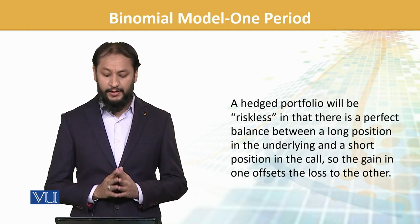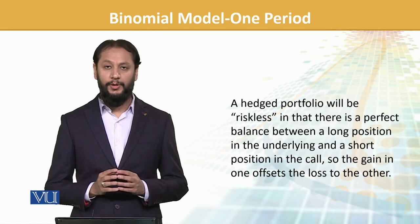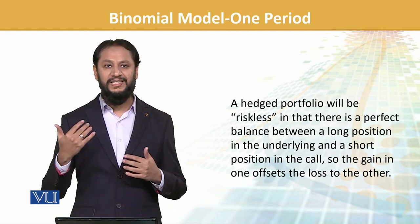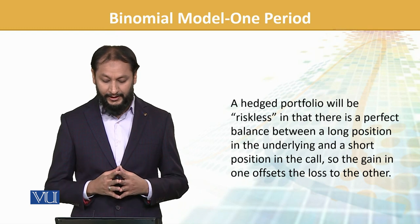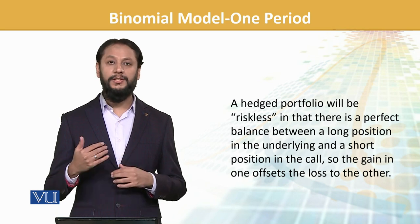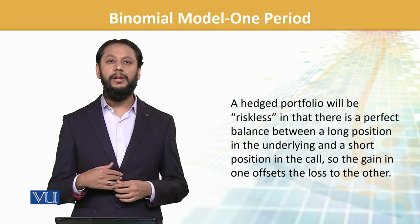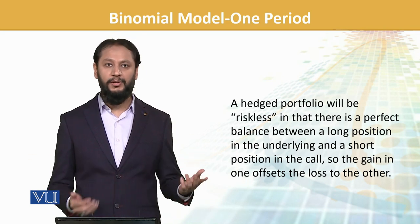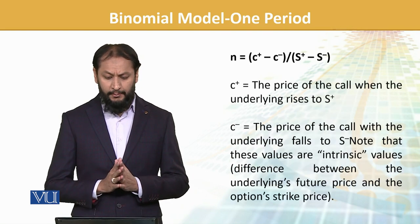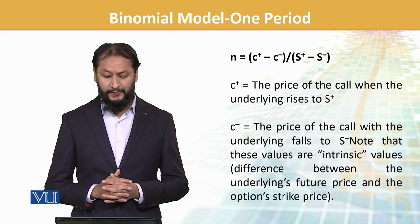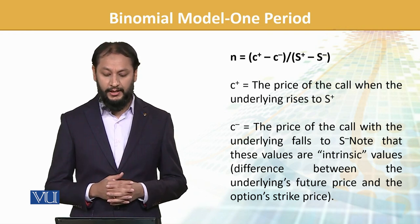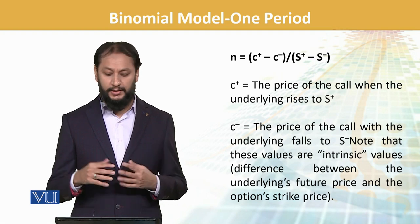This is referred to as a hedge — the gain in one position is offset by the loss in another. This is the combination of the hedge. In the binomial model one-period, n is equal to (C+ minus C−) over (S+ minus S−), where the plus and minus signs refer to the movement uptick or downtick.